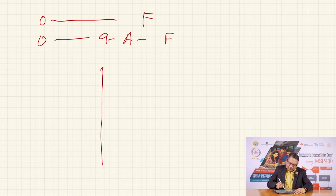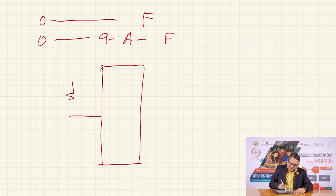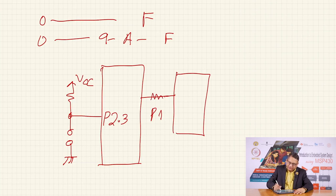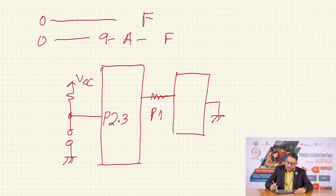Let me draw a sort of block diagram. Here is my MSP430 microcontroller. Here is my switch connected to a pin which happens to be P2.3 in pull-up mode. The port 1 pins — all eight of them — are being used to connect to the seven segment display with appropriate current limiting resistors. Because this is a common cathode display, we are going to ground the common cathode pin of the seven segment display.